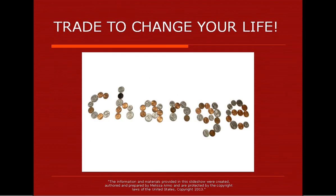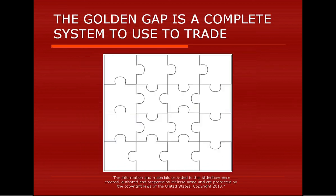Trade to change your life. If you learn how to trade properly and trade gaps, it's going to change your life — because you're going to be able to make money in 30 minutes, 15 minutes, 5 minutes, one hour, instead of sitting at your desk all day for 8 hours. The Golden Gap is a complete system. You take all the pieces of the puzzle: analyzing the gap, looking at the rating system, finding the entries, looking at the targets. Every single thing has multiple targets — first target, second target, and what I call the dream target. This is how you set things up to trade.